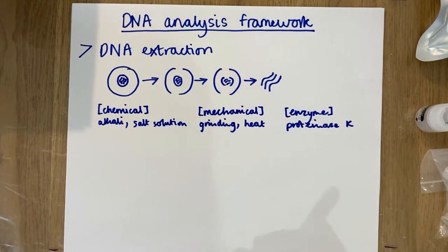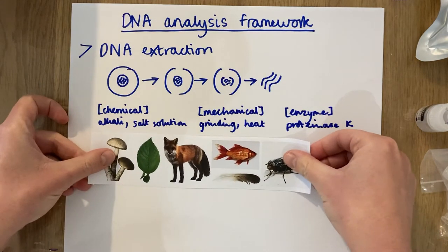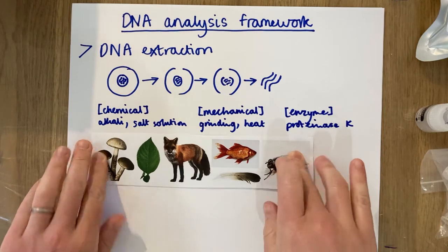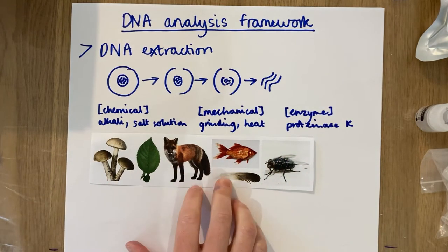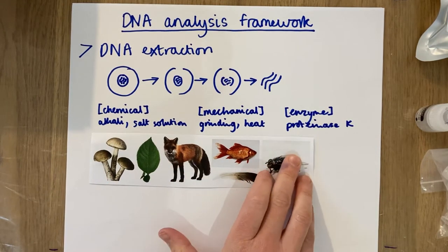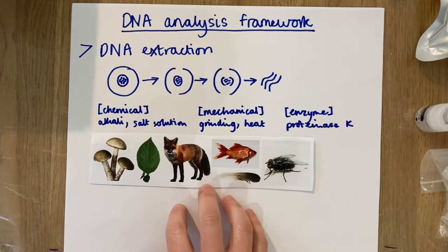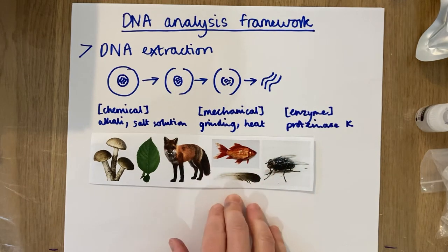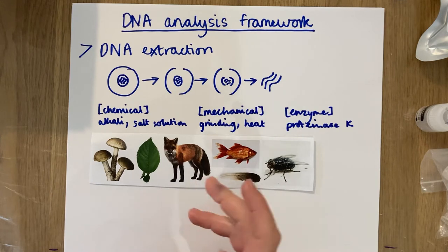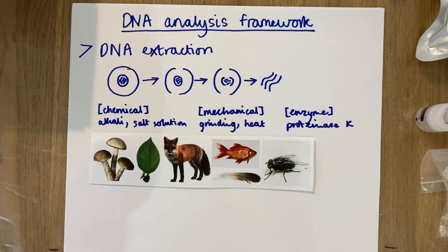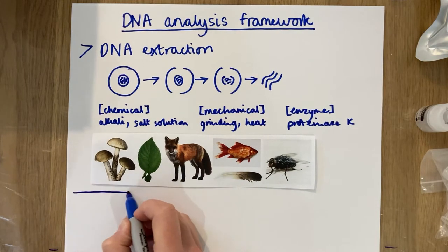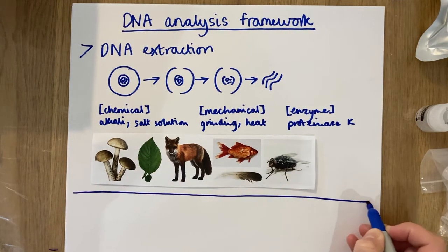We at Bento Lab are aiming to be able to enable you to extract DNA from all different types of tissue — be that fungi, plants, mammals, fish, birds, or insects. We want to be able to supply you with reagents that you can use safely and easily and dispose of at home, and with protocols that are not too time-consuming or complicated, but that will get you reliable amounts of DNA to take through to the next step.